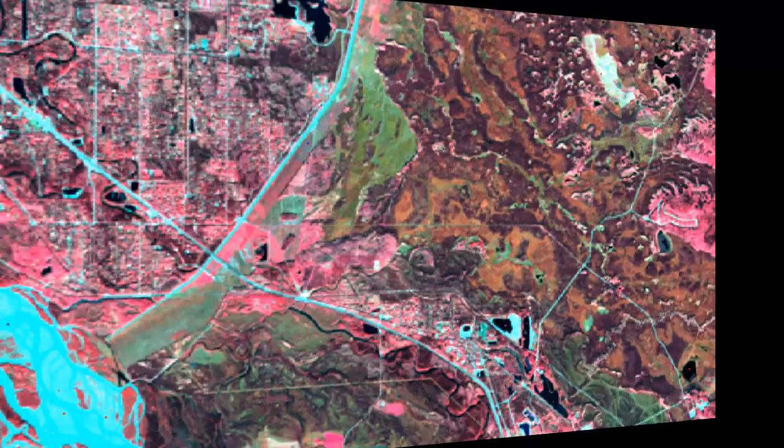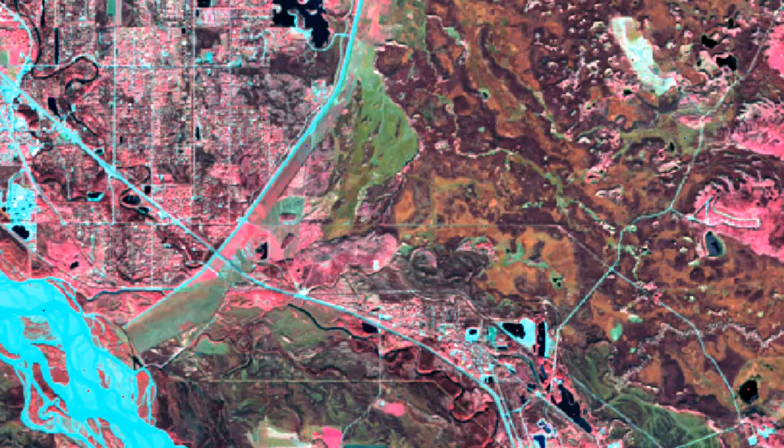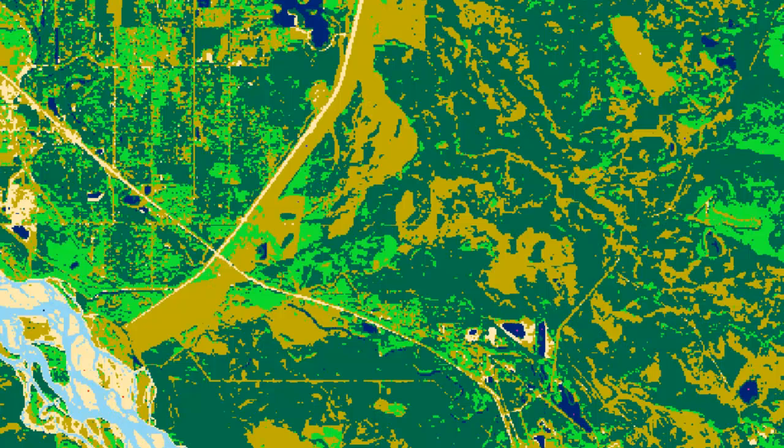Here's our original color infrared satellite image, and here is our land cover classification that we created using unsupervised classification.